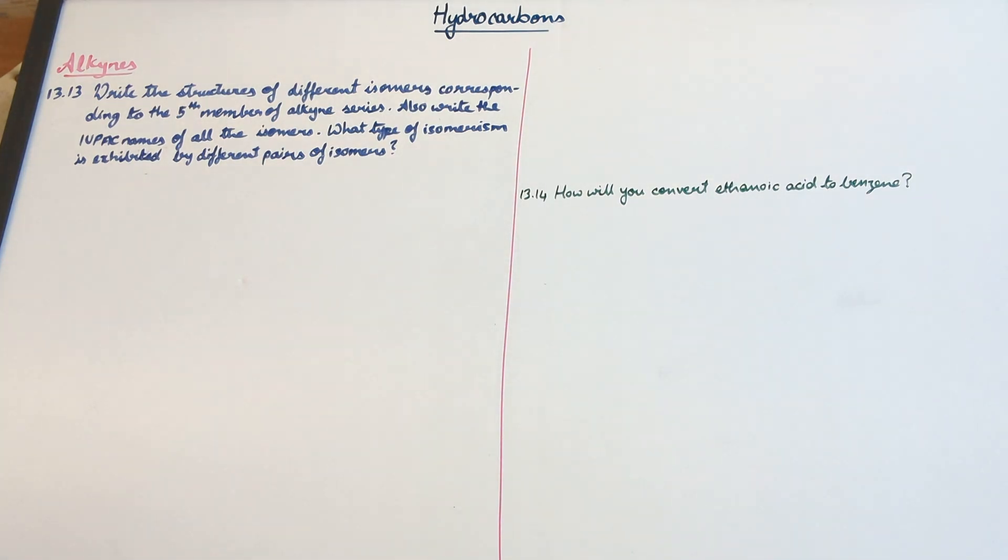So first of all the fifth member of the alkyne series. The moment we think okay fifth member of the alkyne series it's probably pentyne. But in alkynes and alkenes the one with the one carbon atom is not considered. So ethyne is the first member of our series and so the fifth member of the series would be hexyne.